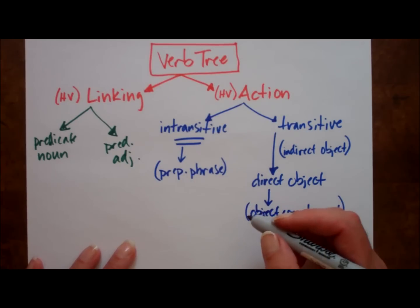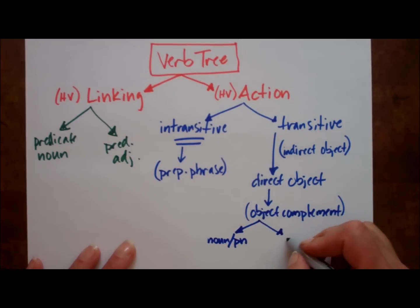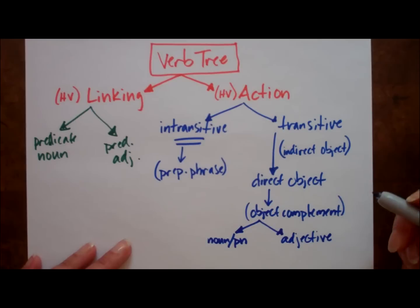But if there is an object complement, it will only be one of two things. Either a noun or pronoun, or an adjective. That completes the tree.